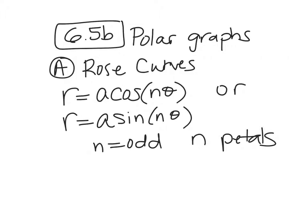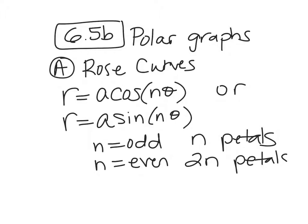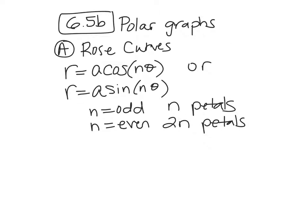If N is even — so if you have 2θ, 4θ, 6θ, 8θ — then you will have 2N petals. Twice as many. So if you want to make a rose with 4 petals, you would want N to be 2. We're also going to talk about the maximum R value — that's the farthest the R goes out to on a polar graph. Our max R is equal to the absolute value of A. It's the distance from the pole that is bounded by the graph.